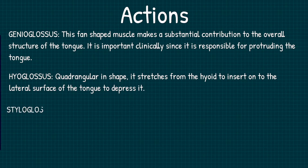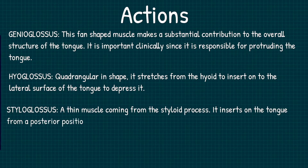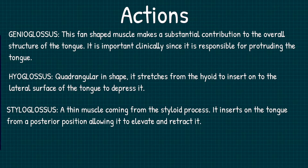The styloglossus is a thin muscle coming from the styloid process. It inserts onto the tongue from a posterior position, allowing it to elevate and retract it.